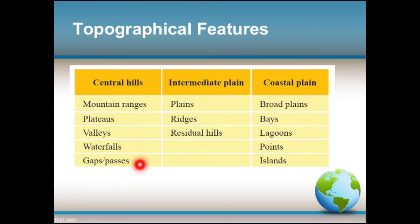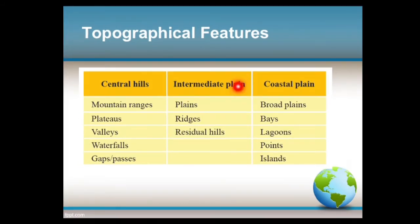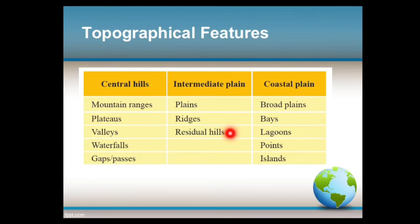Waterfalls — examples include Dunhinda Falls and Rabana Ella. Gap or pass is a narrow opening between mountain peaks — example: Balana Gap. For the intermediate plain: a plain is a flat land area, and a ridge is a chain of mountains or hills that form a continuous elevated crest for some distance.